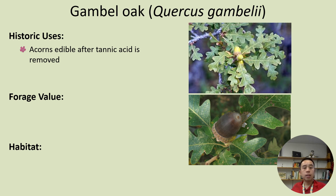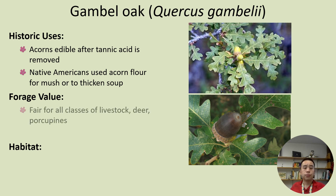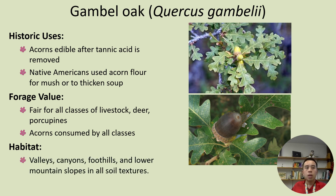Historically speaking, Gambel oak is somewhat edible. It does have tannic acid or tannins, like most oaks, but these can typically be removed through cooking processes. Indigenous tribes and Native Americans used acorns to make acorn flour for different types of soups and meals. Tree fruits are often very rich in nutrition, which may be why they are focused on by different classes of livestock.